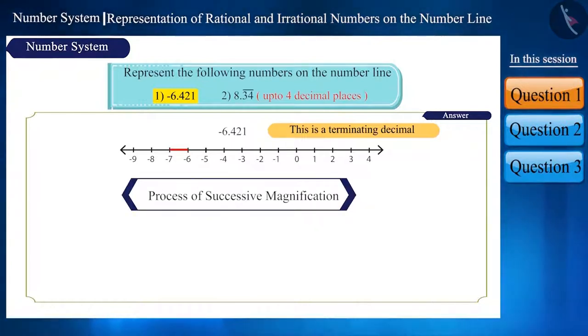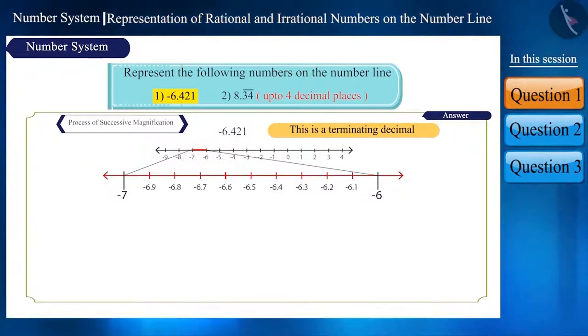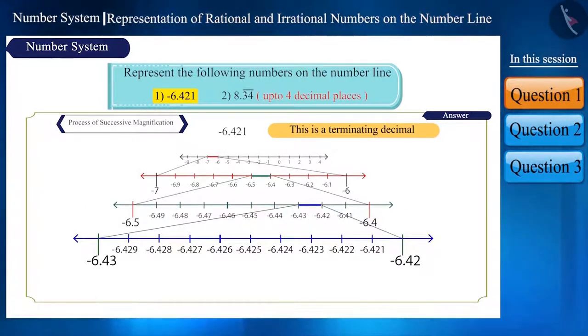We will represent this number using the process of successive magnification like this. Now the number will lie between minus 6.42 and minus 6.43. Here.